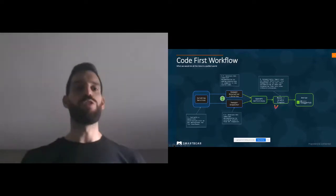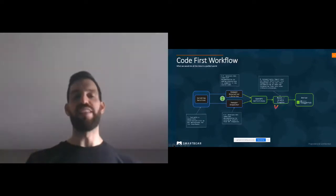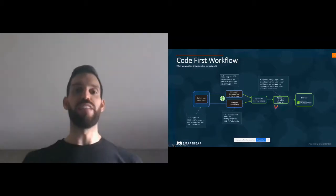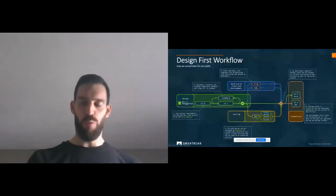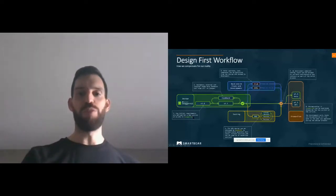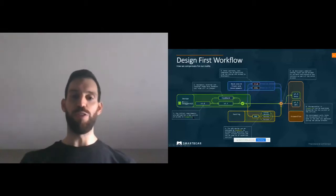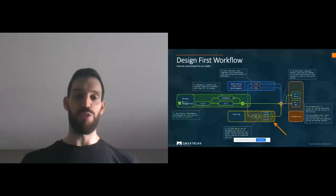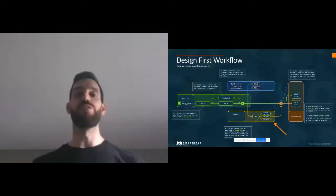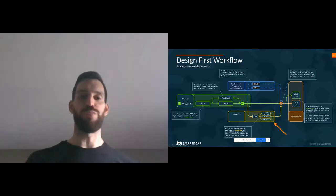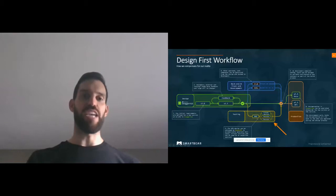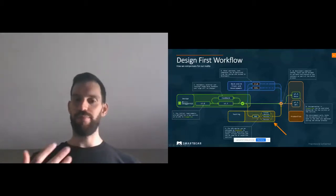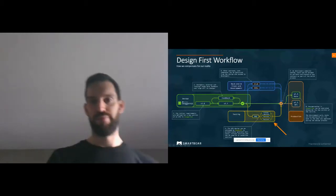In a design-first workflow, our first step before we implement anything is to talk about what it is that we actually want to build — and create some examples of how our users could be interacting with our API. This workflow involves SwaggerHub along with the testing tools SOAP UI and ServiceV. It's like creating a sketch before we actually go and build a UI. The goal is to have this design phase, talk about what problems we're trying to solve, and then go build our changes using the documentation from the design phase as a contract to build to.